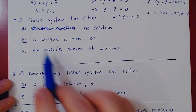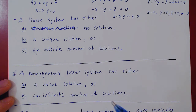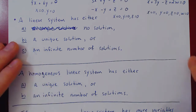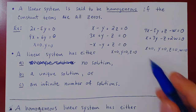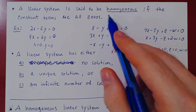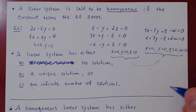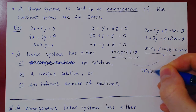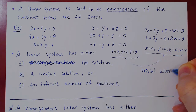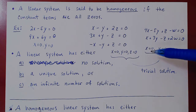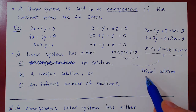That is why, in the case of a homogeneous system, you can eliminate the possibility of having no solution, and you can only have a unique solution or an infinite number of solutions. Because the solution of setting all variables equal to zero always works for a homogeneous system, we give it a special name: the trivial solution. It is called trivial because it does not matter what the coefficients are, how many variables you have, or how many equations you have — if you multiply anything by zero and add those zeros up, the result is always zero.